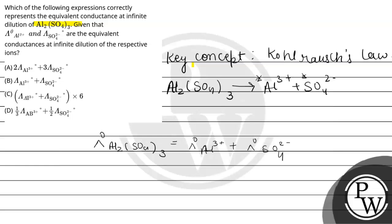So according to the options, the correct option is option number B. So the final answer is λ⁰ Al³⁺ plus λ⁰ SO₄²⁻. I hope, student, you understood it well. Best of luck.